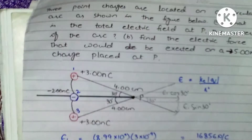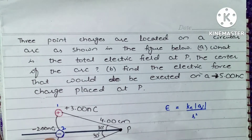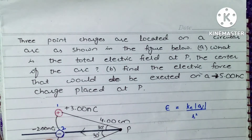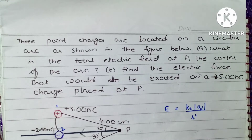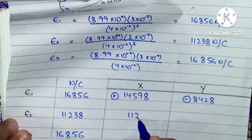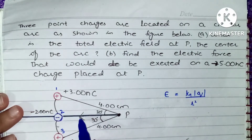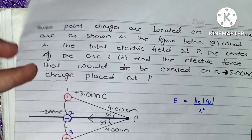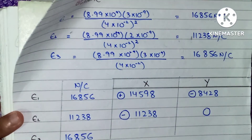For charge 2, this charge is negative. A negative charge attracts the electric field toward itself, so the direction is toward the charge. Because it is entirely in the x-direction, there is no y-component — the x-component is simply 11,238. The direction is toward the negative x-axis, so do not forget to include a negative sign.